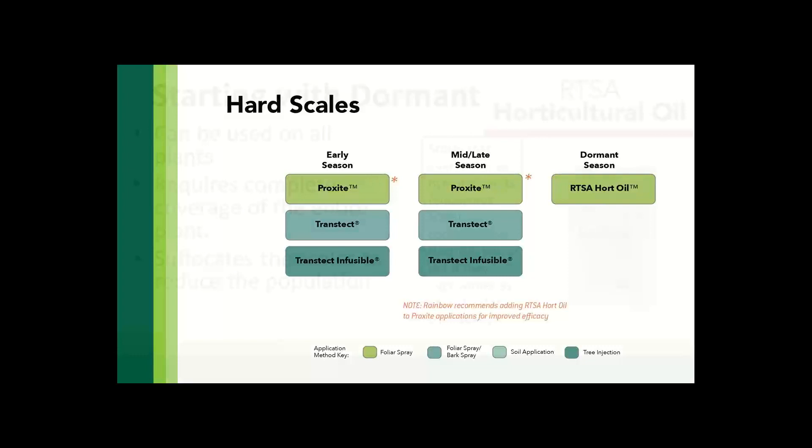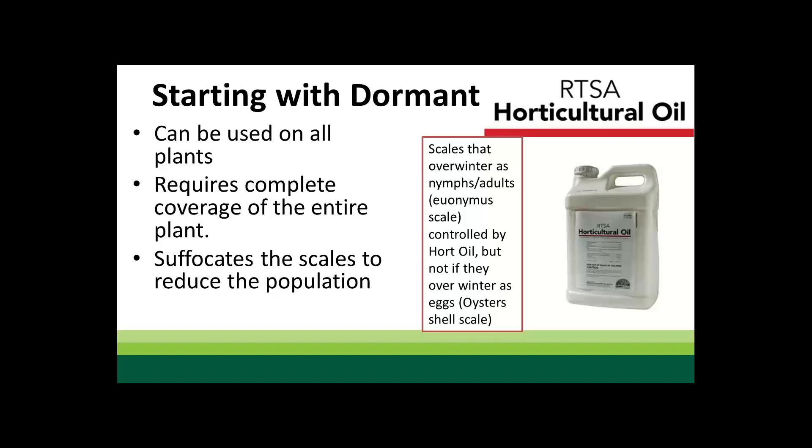Let's imagine it's February, March, or in some cases early April in the U.S. — you're going to start your season with a dormant oil application. The great thing about dormant oils is they can be used on generally all plant material, giving you the most broad-range control. However, there are drawbacks — its mode of action works by suffocating the scale, so it requires complete coverage of the entire plant. It doesn't move translaminally, so think of it as basically covering the plant in oil or wax.